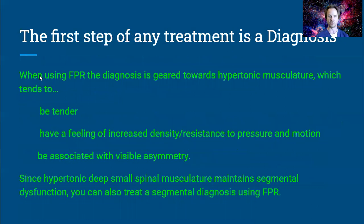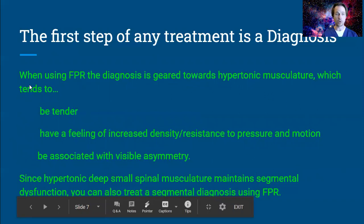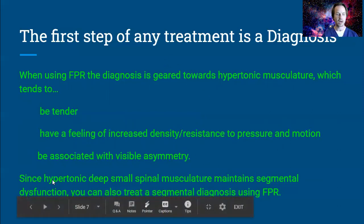The first step of any treatment is diagnosis. We're not just going to do the same thing to everybody. Since FPR is geared towards hypertonic musculature, we need to look for tenderness. Hypertonic musculature will be tender and will also have a feeling of increased density and resistance to pressure and motion, and will be associated with visible asymmetry. You should find at least two of these findings. Since hypertonic deep small spinal musculature maintains segmental dysfunction, you can also treat a segmental diagnosis using FPR, and the treatment position will be the same as the segmental diagnosis.